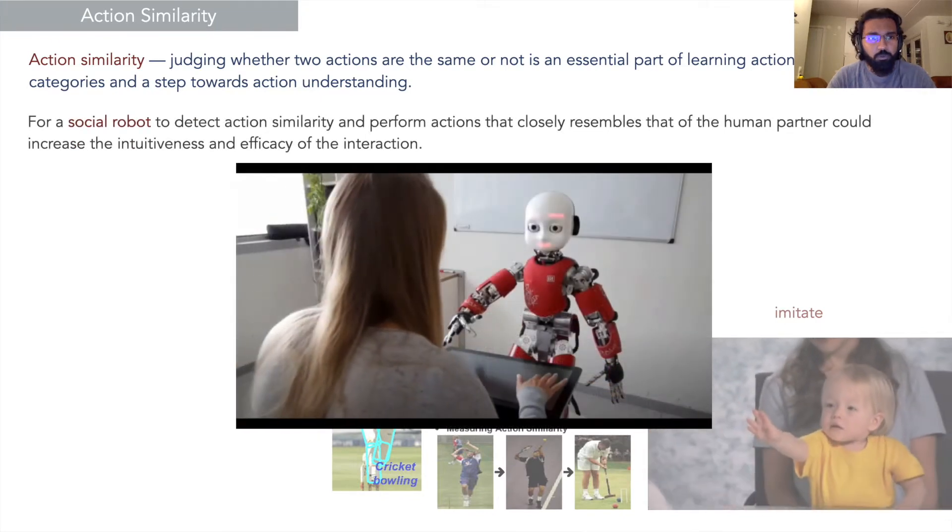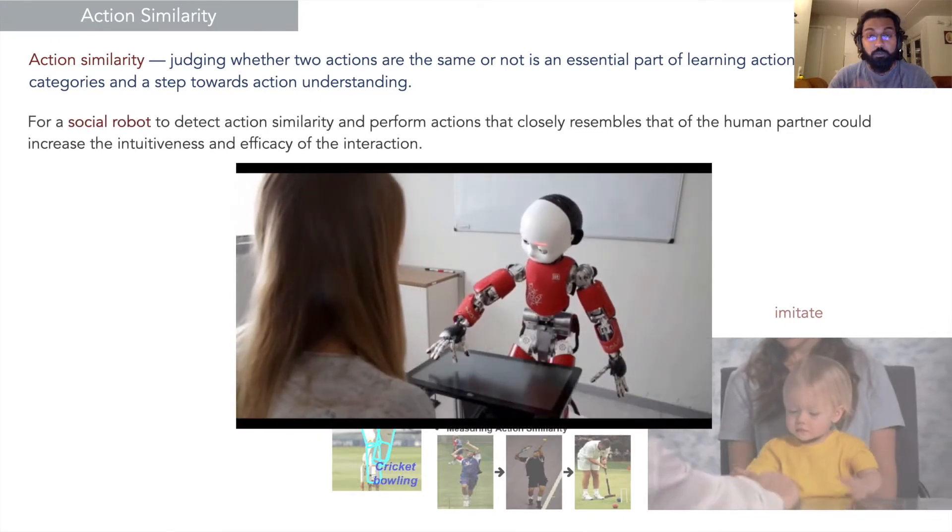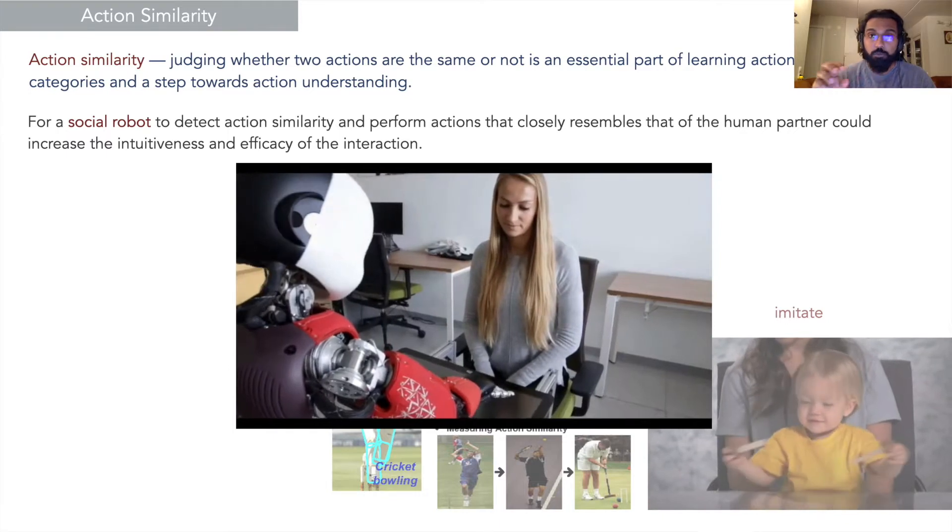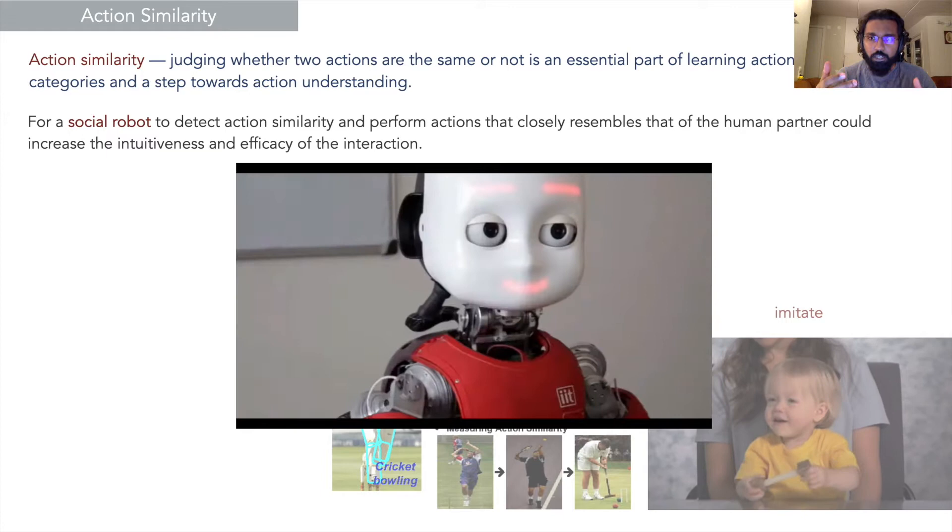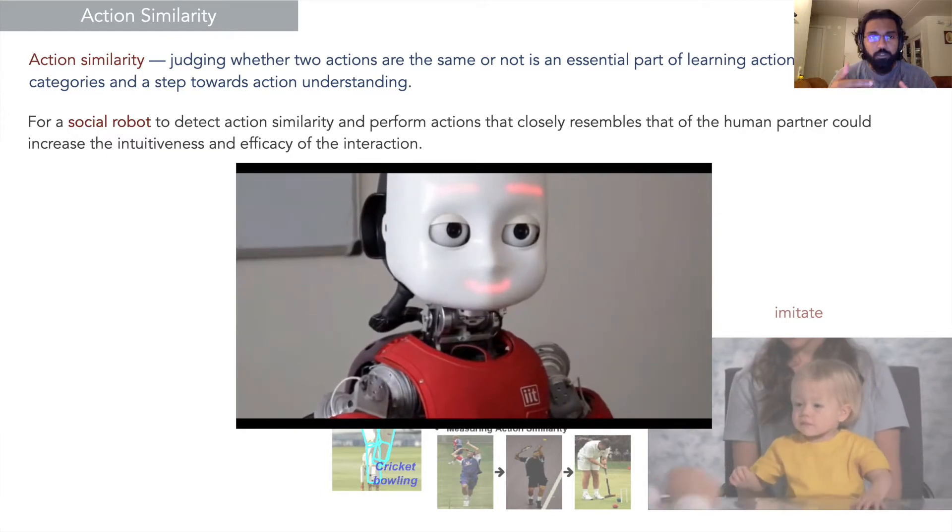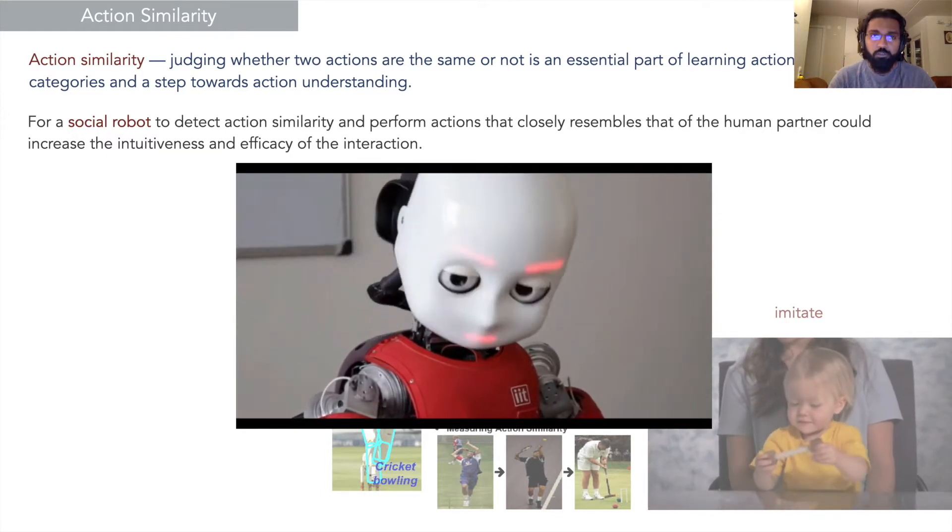From a social robotics point of view, action similarity has been examined in learning from demonstration. Also, the more natural the actions are between agents, the better the interaction and the intuitiveness of the interaction.